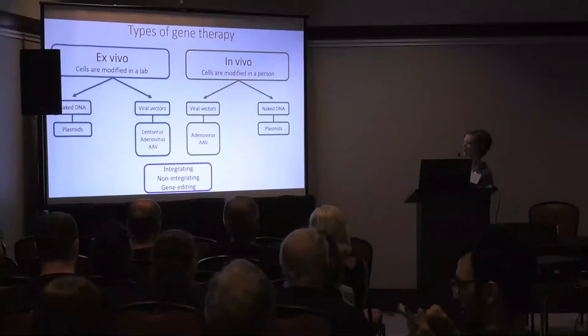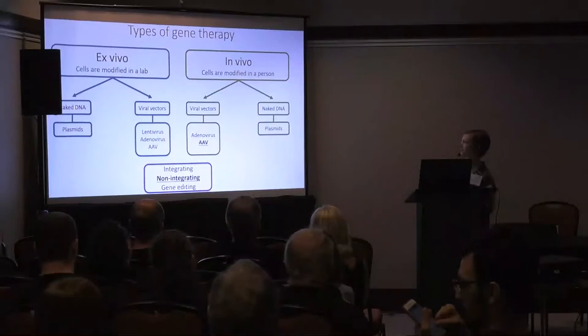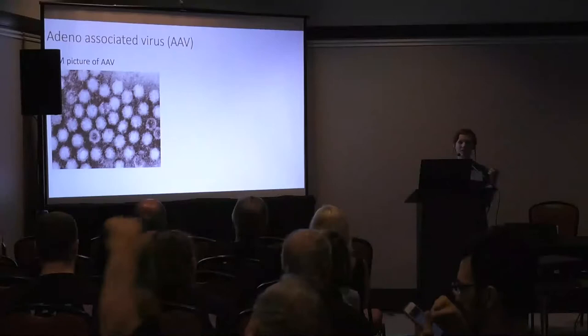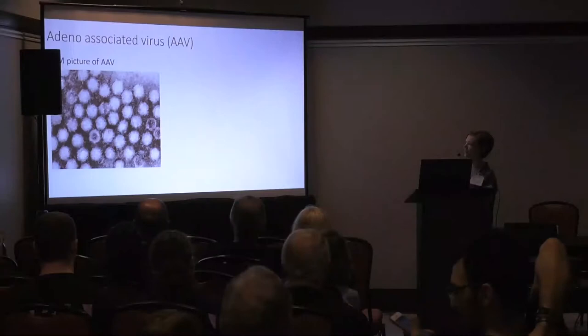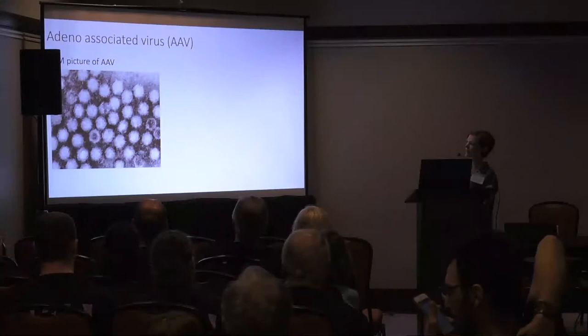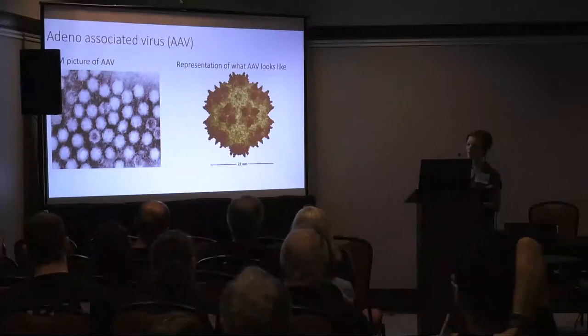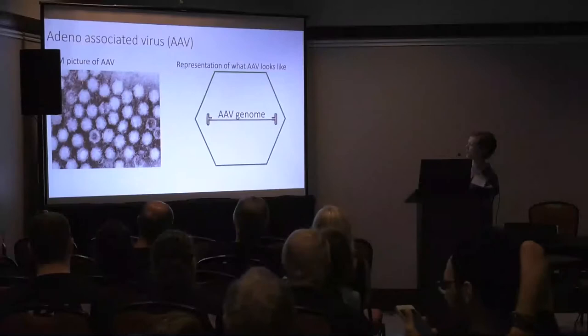AAV is non-integrating. Here's a picture of what AAV looks like — taken with an electron microscope, it has a polygon icosahedral symmetry shape, very small. Inside the virus you have the AAV genome, which is a very small genome with only two genes. We can remove those two genes and put in the gene for PANK2. Now you have a delivery vehicle — a virus that contains, instead of its viral DNA, the DNA for PANK2.